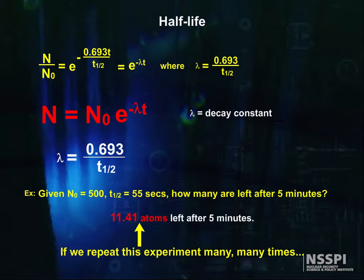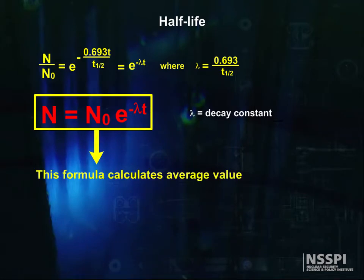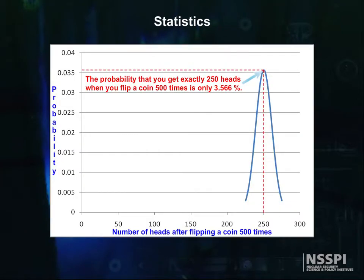There's another wrinkle because it's statistical. Our formula gives the average value. In real life, if you have a small number of atoms, the odds that you will get exactly the answer given by the formula, even if it's a whole number, is small. Let's think of flipping coins for a minute. If you flip a fair coin 500 times, how many heads do you expect? 250, right? The odds that you get exactly 250 heads when you flip a coin 500 times is only 3.566%. If you repeated this experiment many times, your average number of heads will get closer and closer to 250 — about half the trials higher and about half lower — just as we predicted. It's just that we don't get 250 each time.